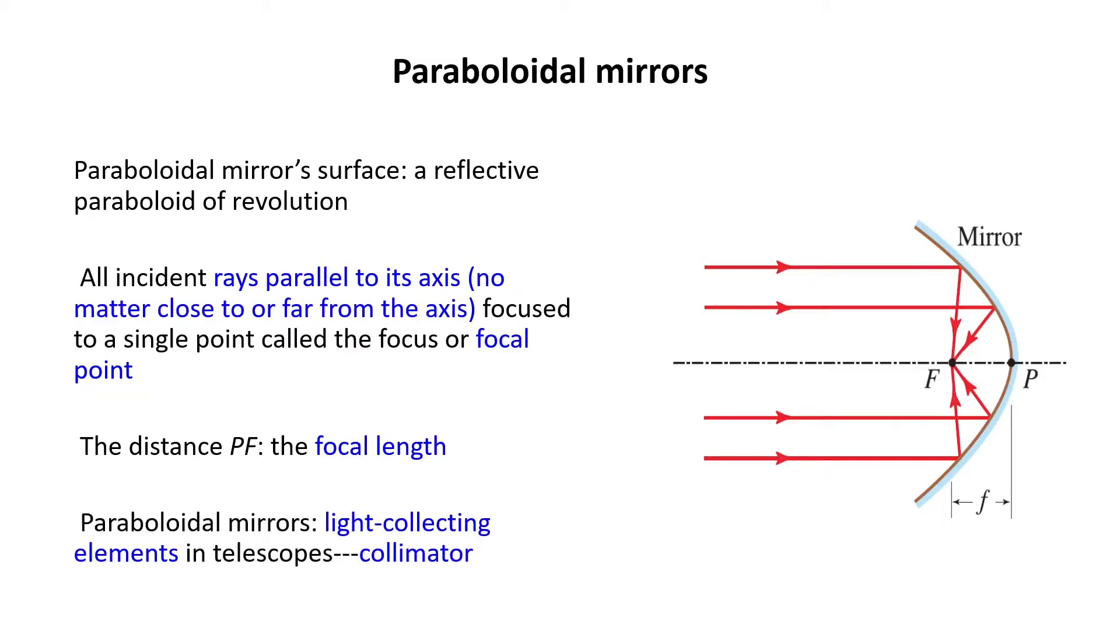We usually use these kinds of mirrors as light-collecting elements in telescopes. In that case, they are called collimators.